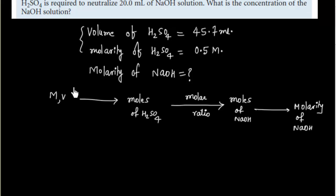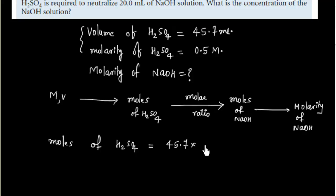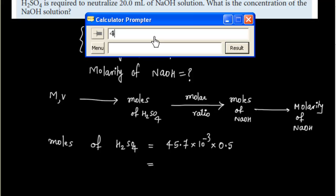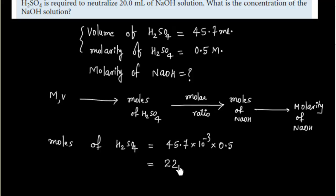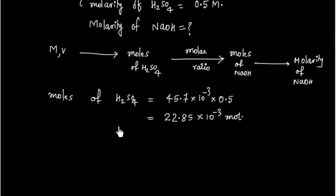Let us first find moles of H₂SO₄. Moles of H₂SO₄ equals volume in liters times molarity, so 45.7 × 10⁻³ L times 0.5 M. This gives 22.85 × 10⁻³ mol. So this is the moles of H₂SO₄.